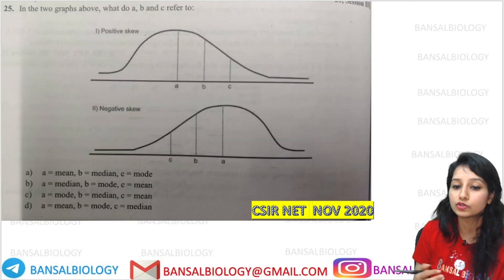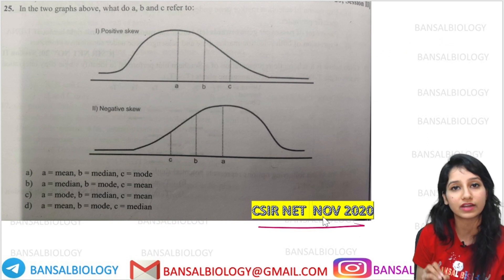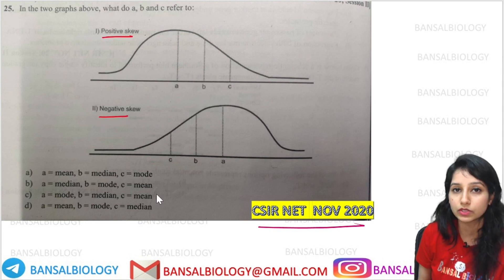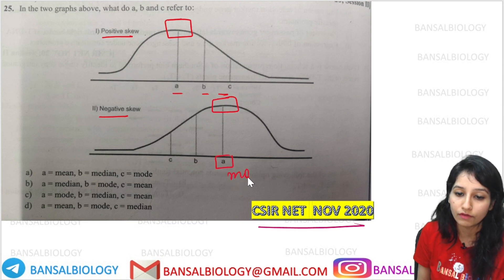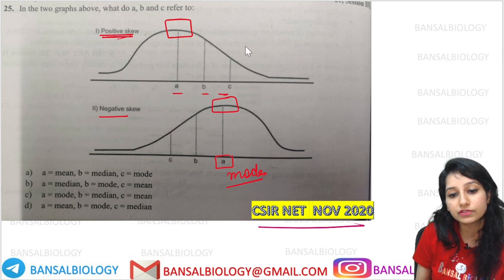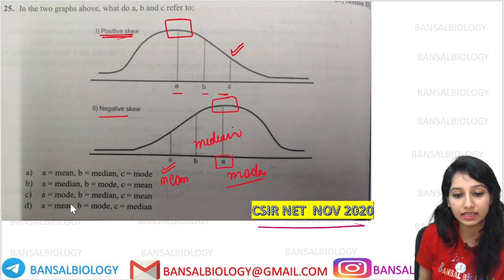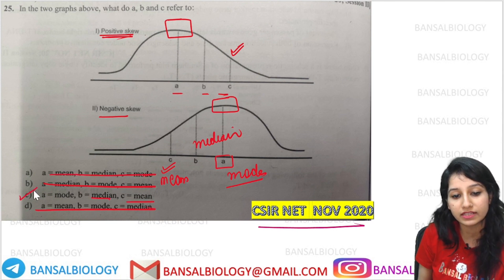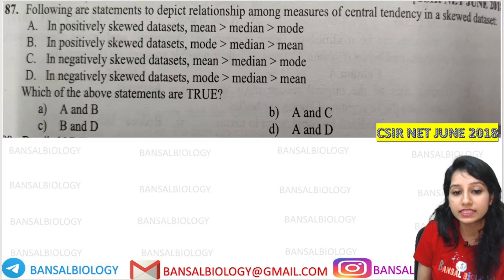If we see some previous year questions here, a question came in November 2020 — the most recent BioStats question. You can see why we have positive skewness and negative skewness. You have to see options A, B, and C. You can see the peak — the most repeated value is the mode, so A is the mode. In positive skewness, the mean is the most, so C is the mean and B is the median. So the C option is correct. You can make 4 marks from this question.